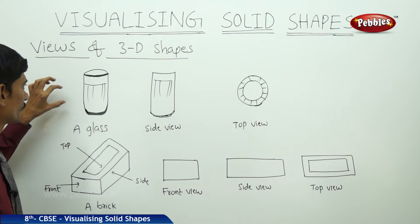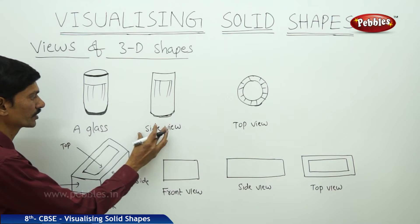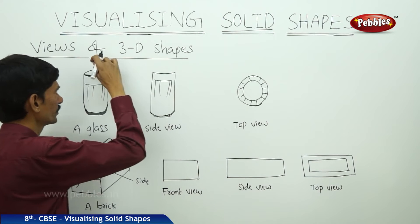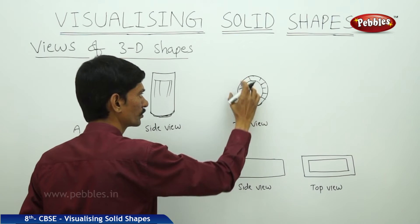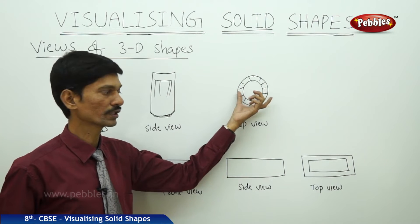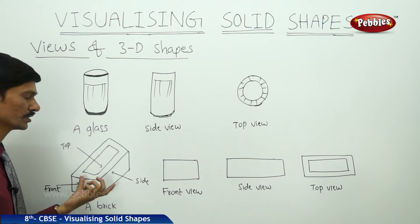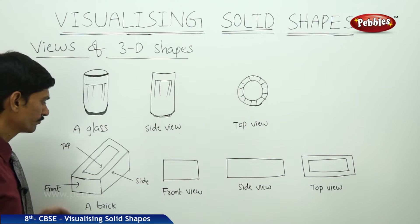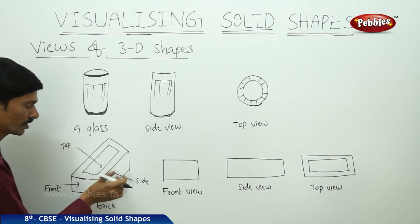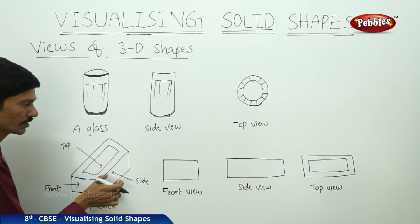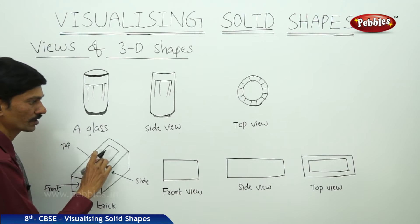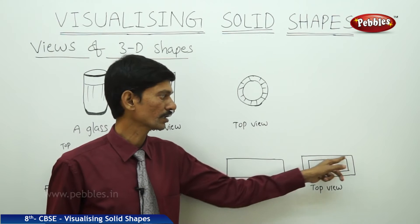If you consider a glass and see its side view, it appears as a cylindrical shape. If you see from the top, it looks like two concentric circles — like a circular path or a ring. If you consider a brick, it looks like a cuboid. The front view of the brick is a rectangular shape, and the side view is also a rectangular shape.